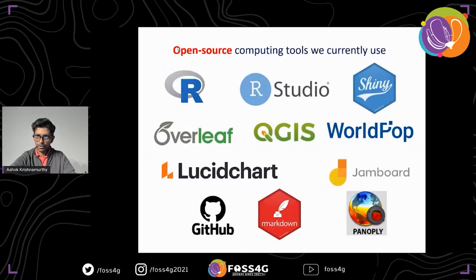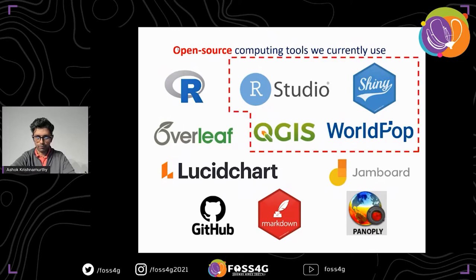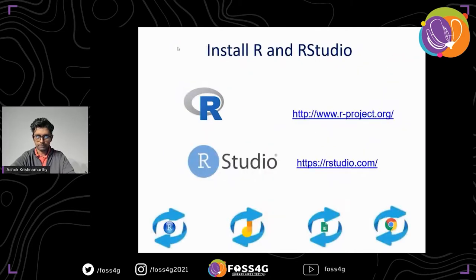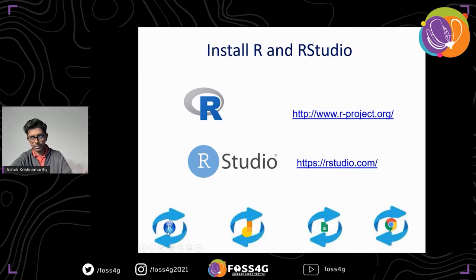Here are the open source computing tools we currently use, but in this presentation I'm specifically going to focus on R Studio, the R Shiny app, QGIS, and WorldPop. If you are interested in downloading and installing R and R Studio, you can follow the provided links. Throughout the presentation you will see these logos on the bottom, which means I'll probably be switching from PowerPoint to R, possibly to Jambo, Google Sheets, or even a browser.